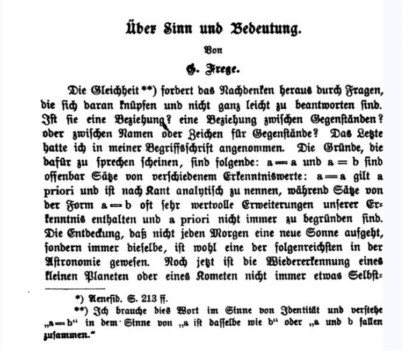In the philosophy of language, the distinction between sense and reference was an innovation of the German philosopher and mathematician Gottlob Frege in 1892 in his paper on Sense and Reference, reflecting the two ways he believed a singular term may have meaning. The reference of a proper name is the object it means or indicates; its sense is what the name expresses. The reference of a sentence is its truth value; its sense is the thought that it expresses.